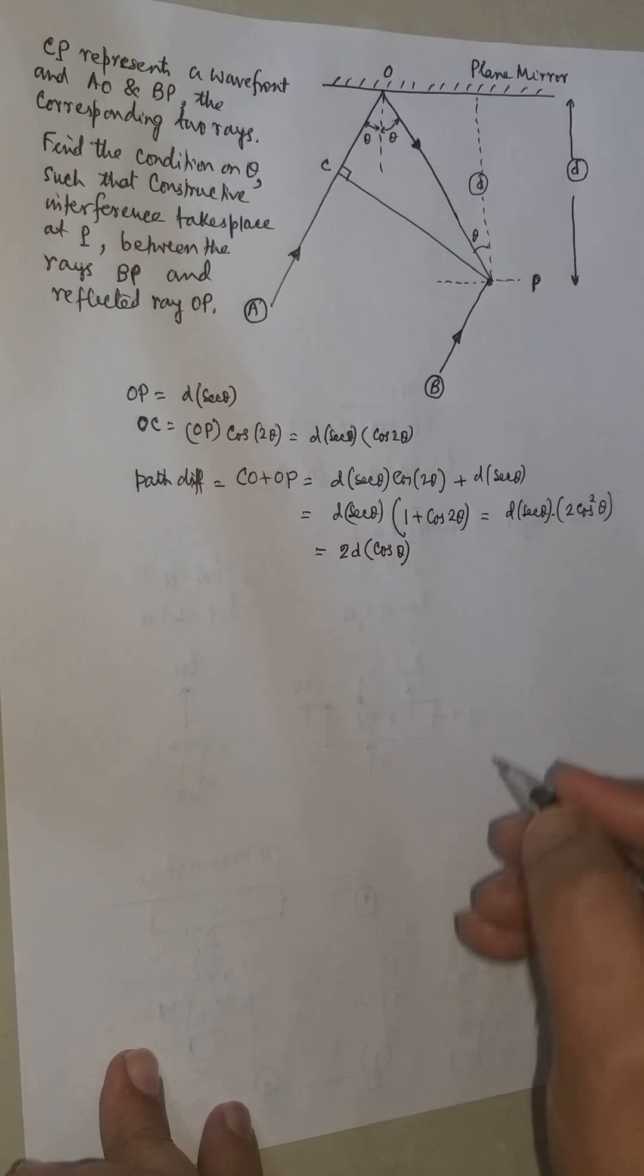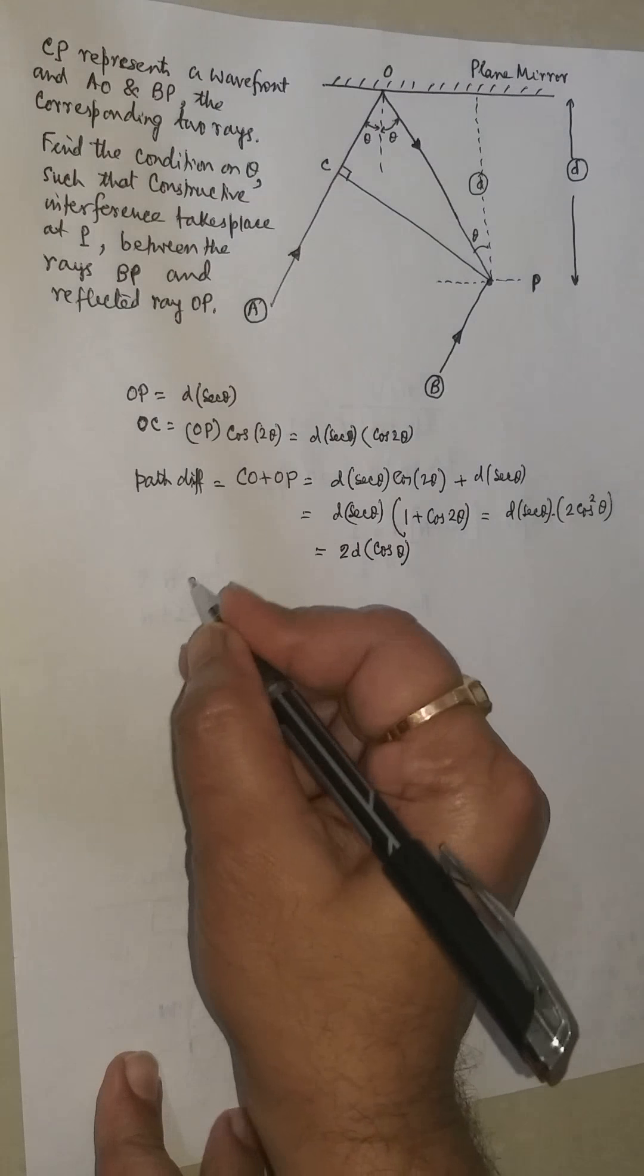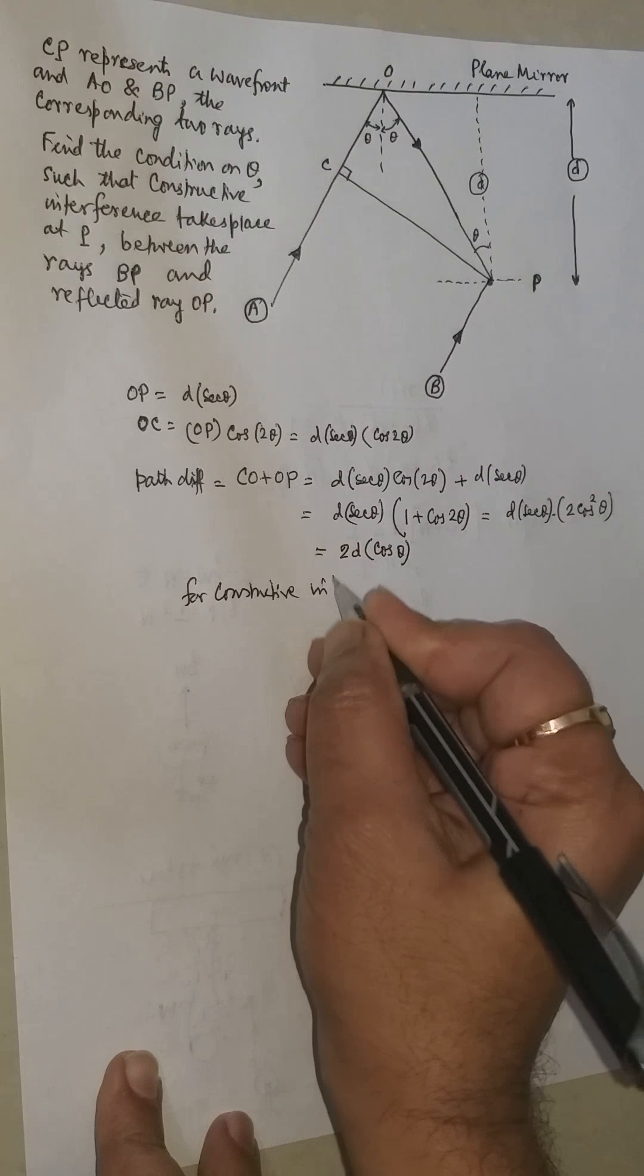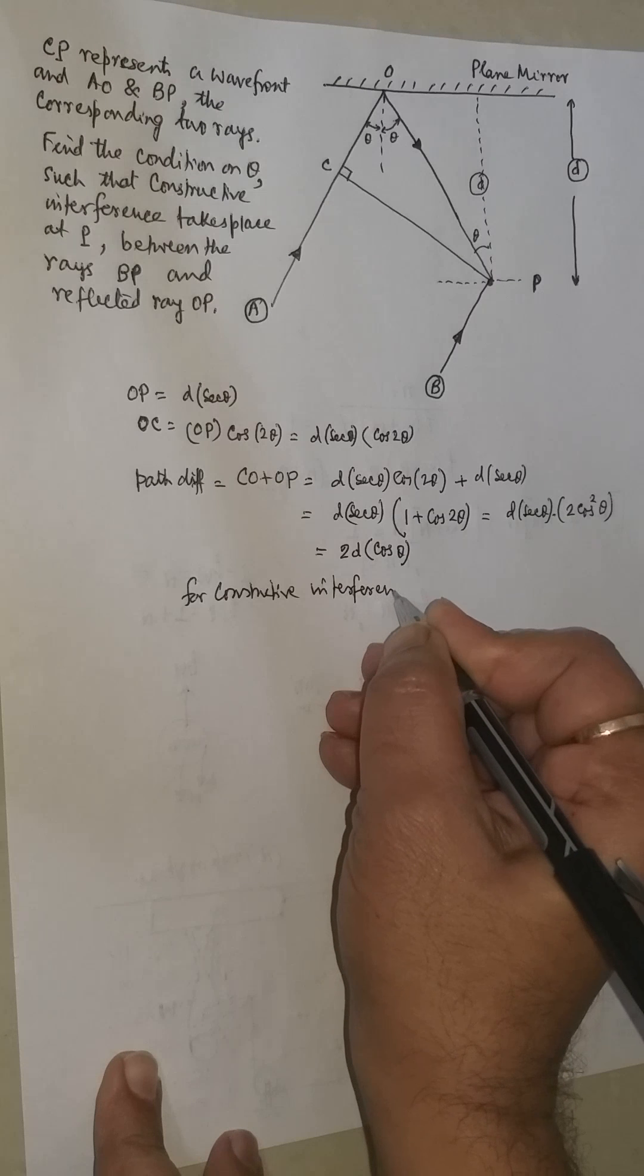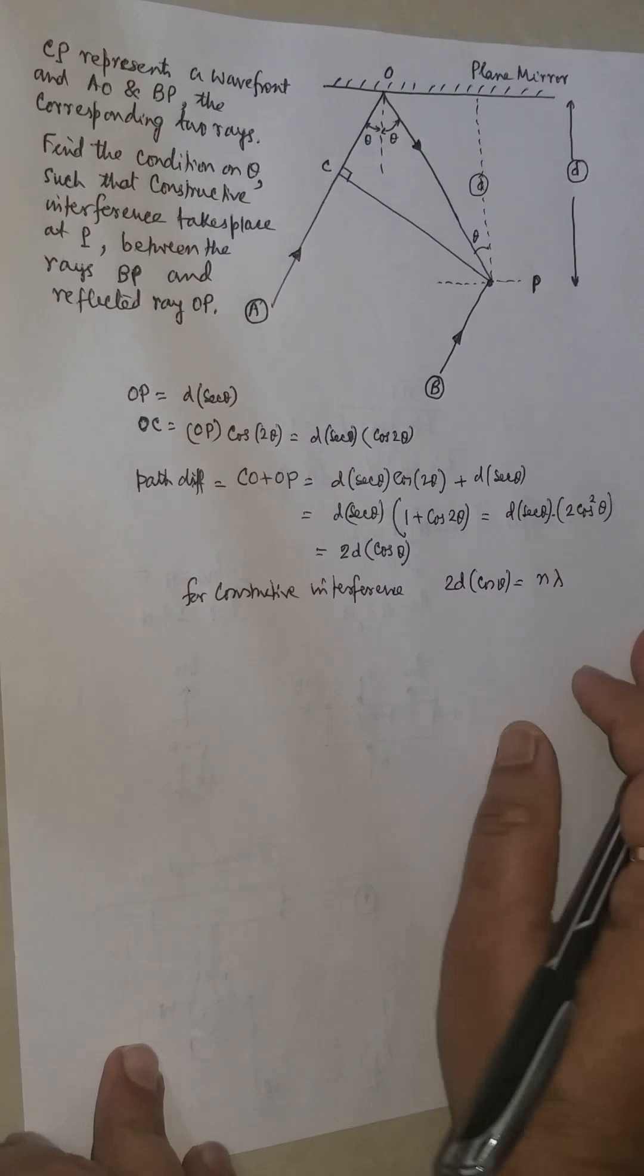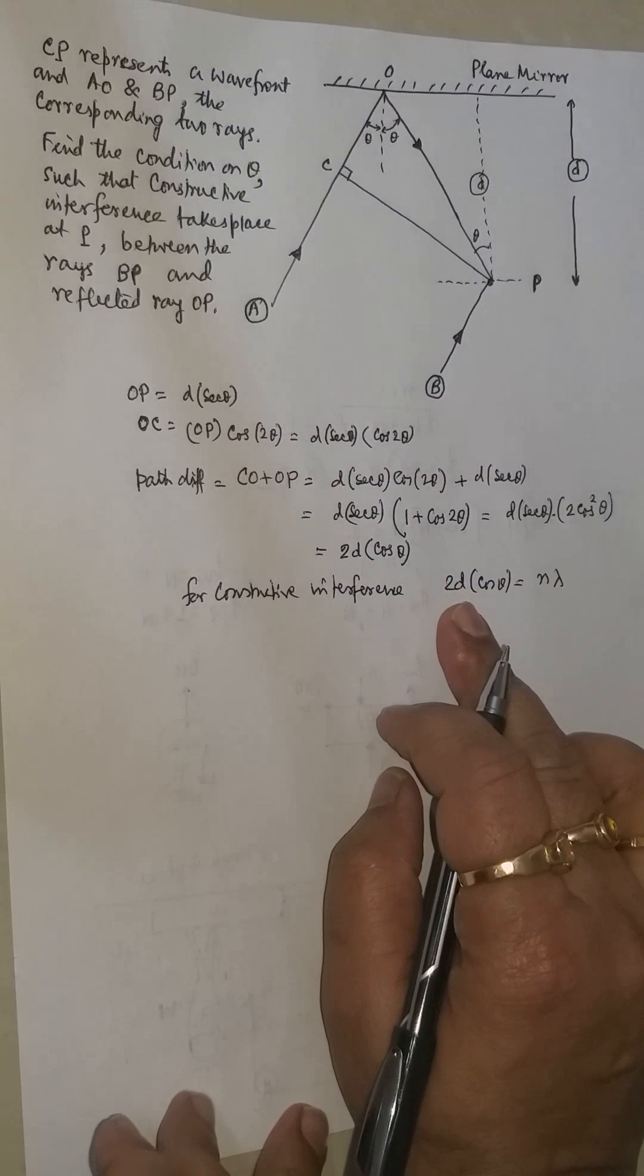And this path difference should be equal to, for constructive interference, 2D cos theta should be equal to N lambda. Now, one more thing we are missing here.